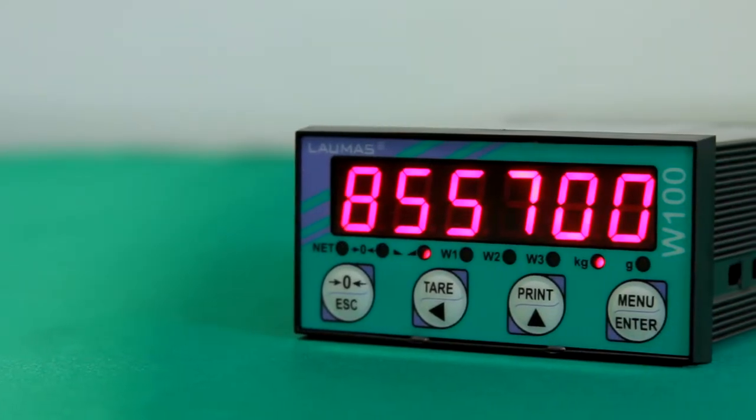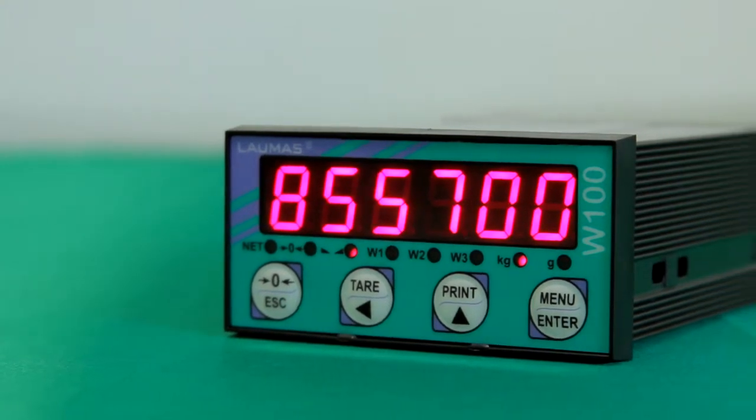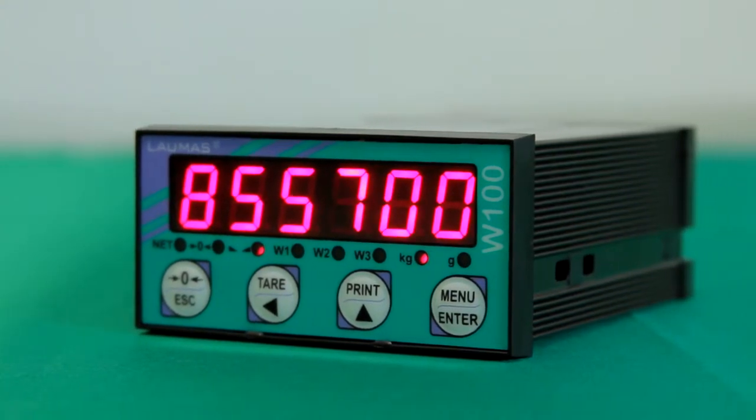The W-100 series is a simple and economic weight indicator transmitter for PC PLC.